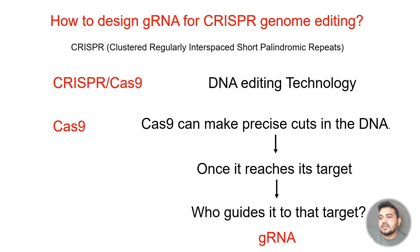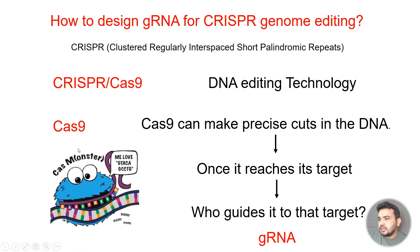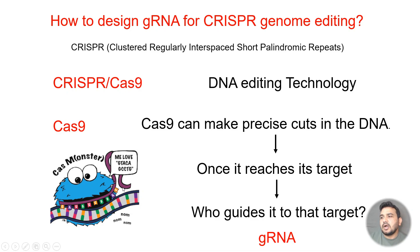It is the guide RNA which guides Cas9 to cut at a specific location. The guide RNA has a specific sequence, and wherever it finds that target sequence, it can cut the double-stranded DNA. We can use this feature for knockout and other genome editing purposes.